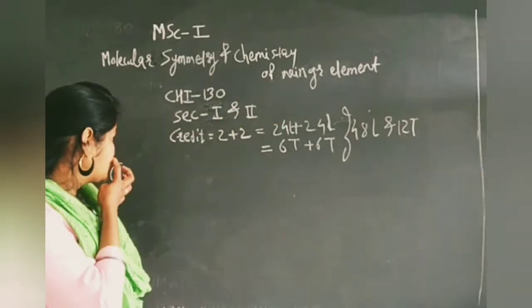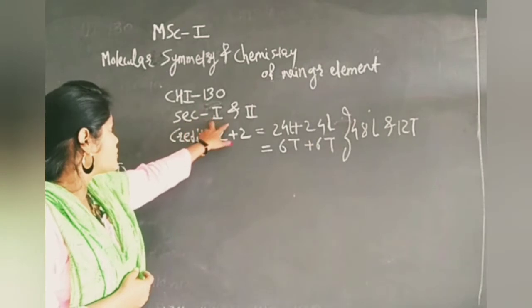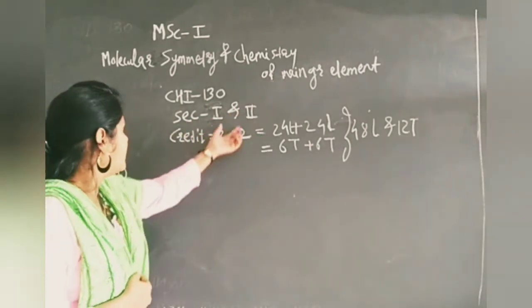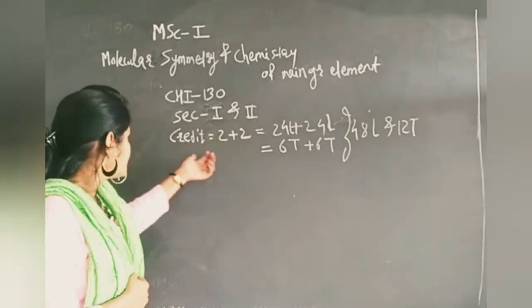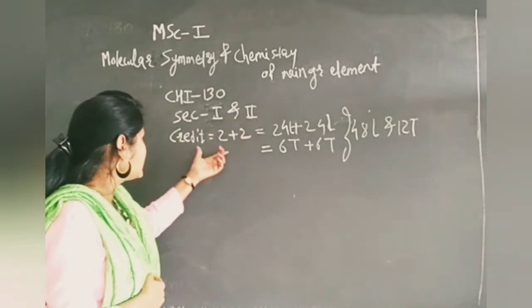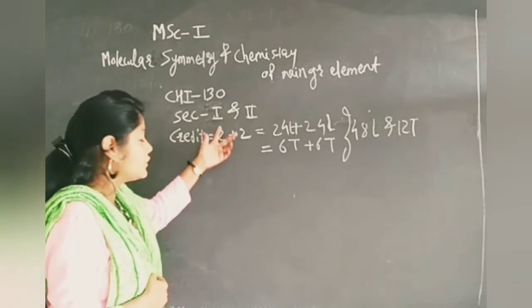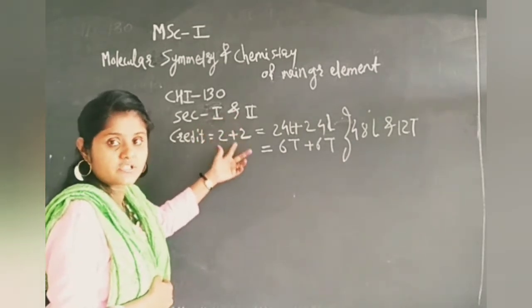This total course is of two sessions, session 1 and session 2. Out of that, I am going to take session second. The total credit for this course is 4 credits, 2 for section first and 2 for section second.